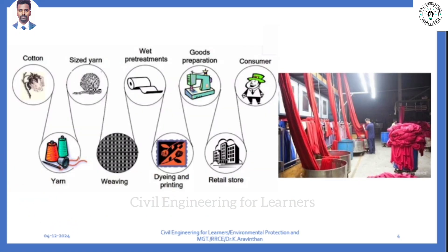They derive cotton from plants, then make it into yarn. Yarn will be in a single thickness. If you want to make it into a different thickness - 1mm, 2mm, and so on - that is called sized yarn. From this, it is taken into sized yarn and weaving.